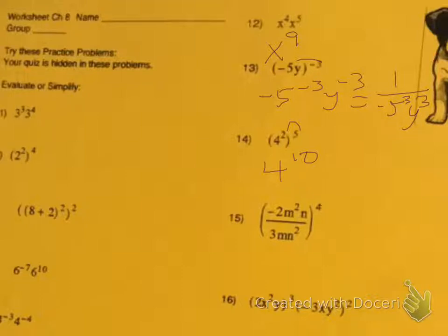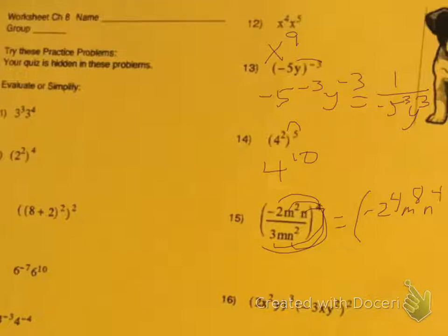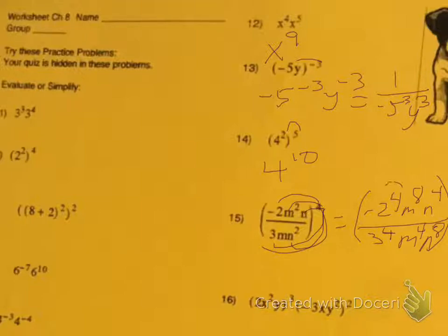On number 15, we need to distribute to everything on the top and distribute to everything on the bottom. So you're going to get negative 2 to the 4th, m to the 8th, n to the 4th, over 3 to the 4th, m to the 4th, n to the 8th. You need to simplify. Since the exponent 4 is even, this makes negative 2 a positive, so you get 16, m to the 8th, n to the 4th, over 81, m to the 4th, n to the 8th.